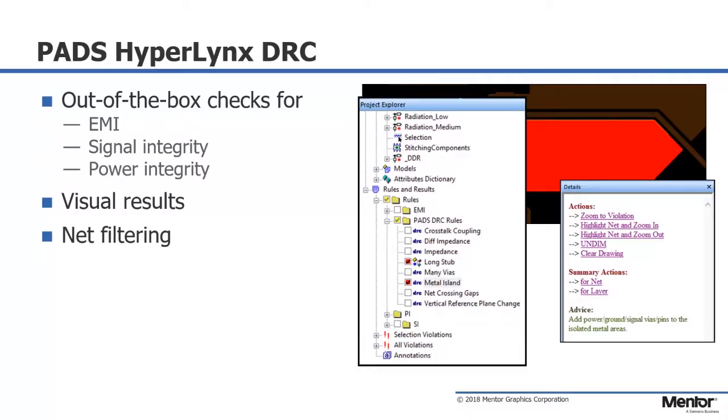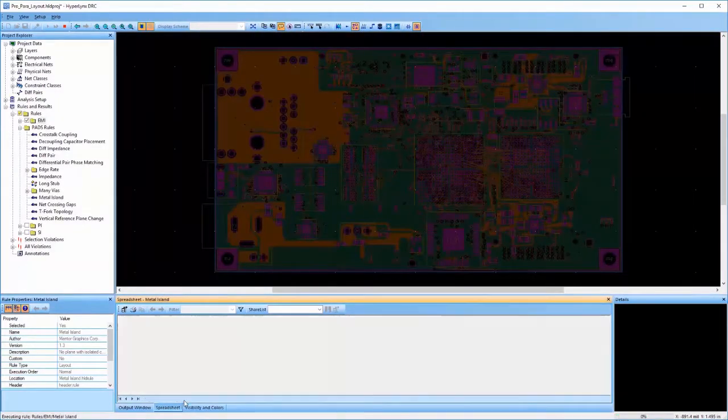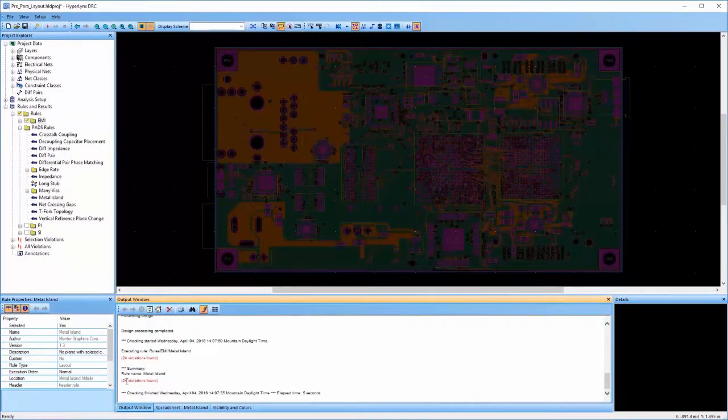With PADS HyperLynx DRC, this tool provides signal integrity and electromagnetic interference rule checks for PCB designs. DRC checks include net crossing gaps and, as shown, metal island. This customizable and powerful electrical rule checker identifies layout oversights that frequently cause EMI or SI issues beyond the traditional PCB checks. This helps eliminate costly re-spins as the errors are caught and fixed before the board releases.